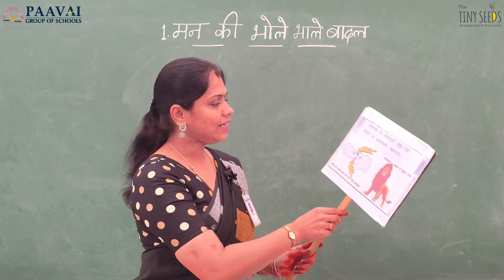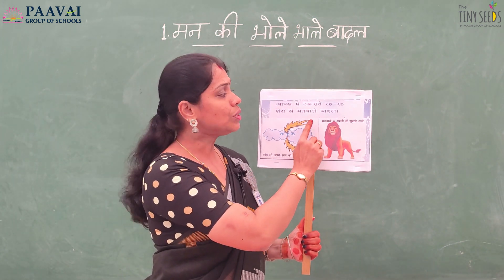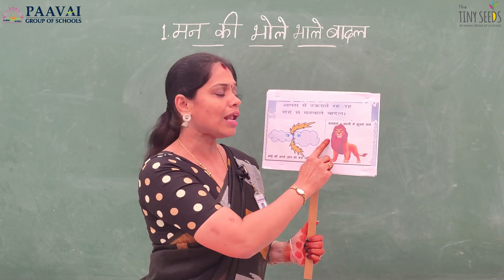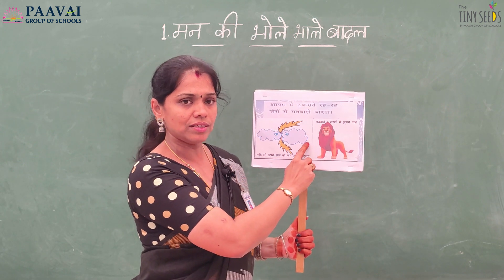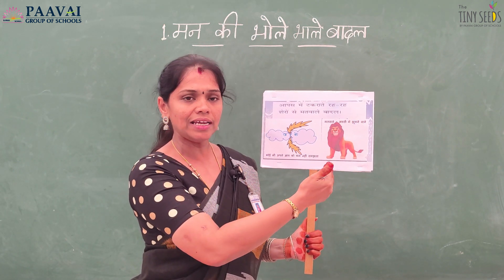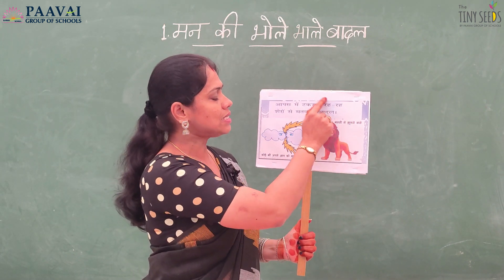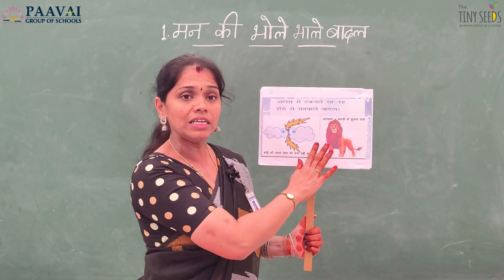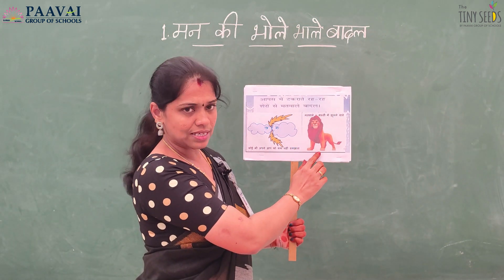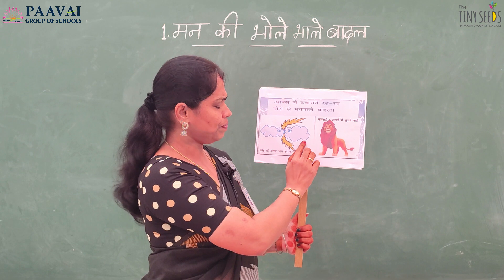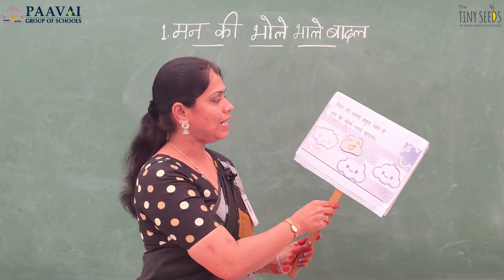Aapas me takrate rah rah, shero se matwale badal. What will the clouds do? They will go and hit each other. Aapas means nearby, takrate means hitting. So when they are hitting each other, we get lightning, and followed by the lightning we get the thunder sound — like the lion roars. These clouds will never get scared of anyone, as the lion in the forest will never get scared of anyone. Likewise, these clouds will never get scared of anyone.